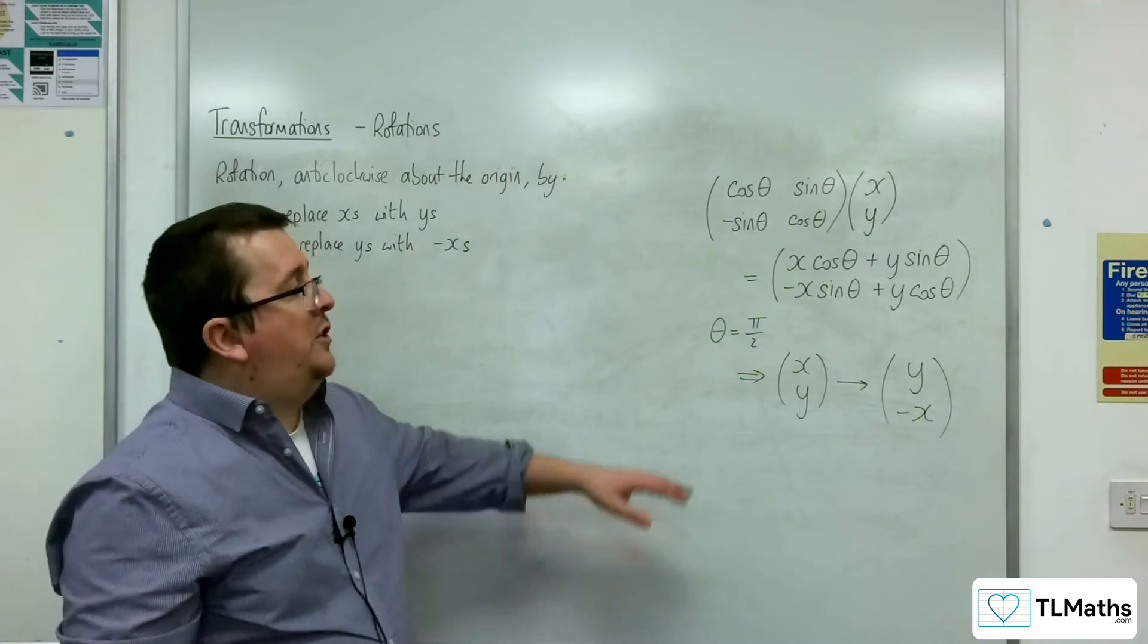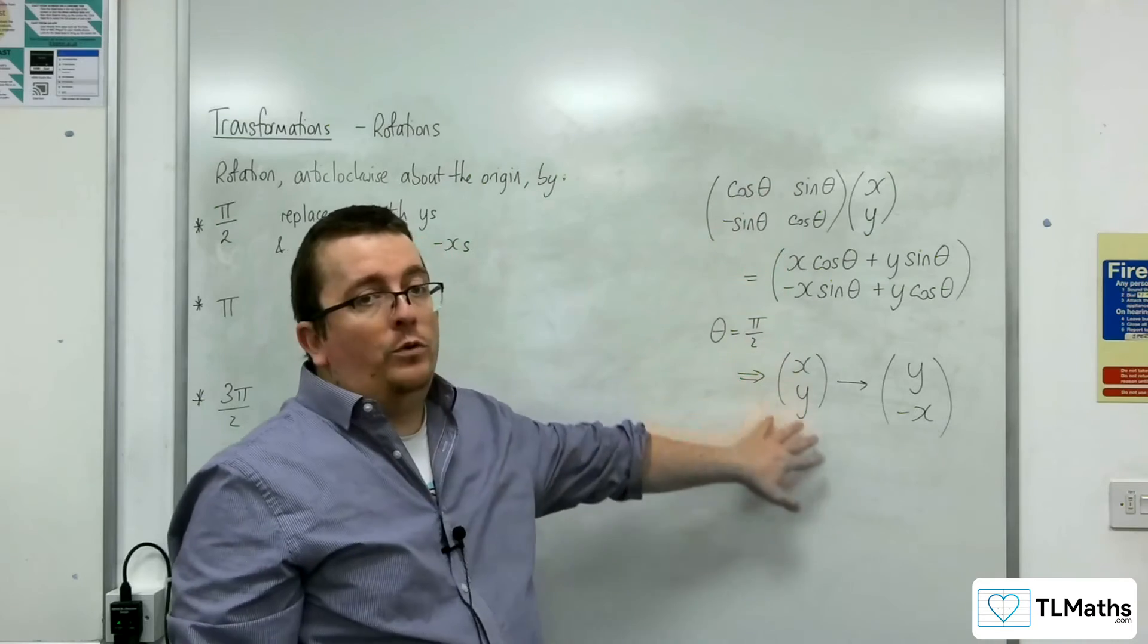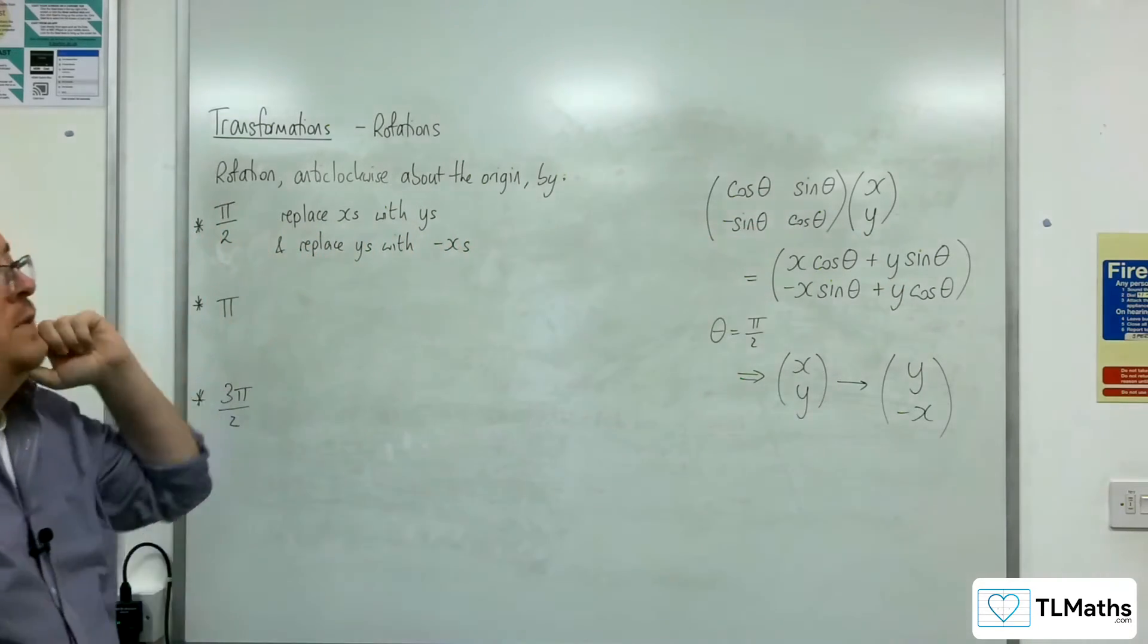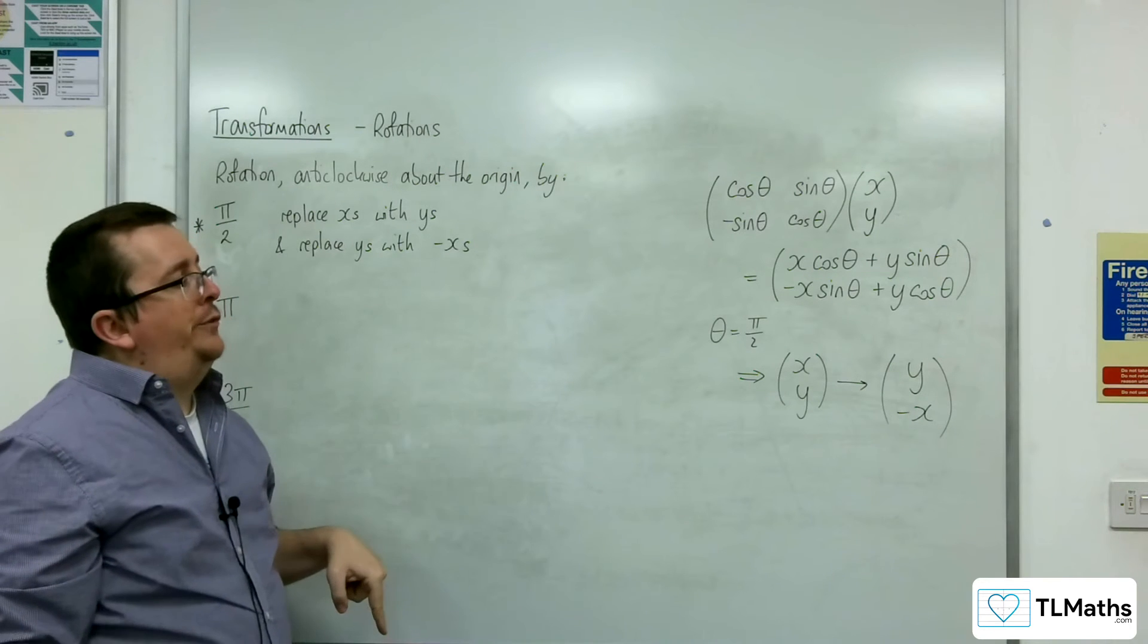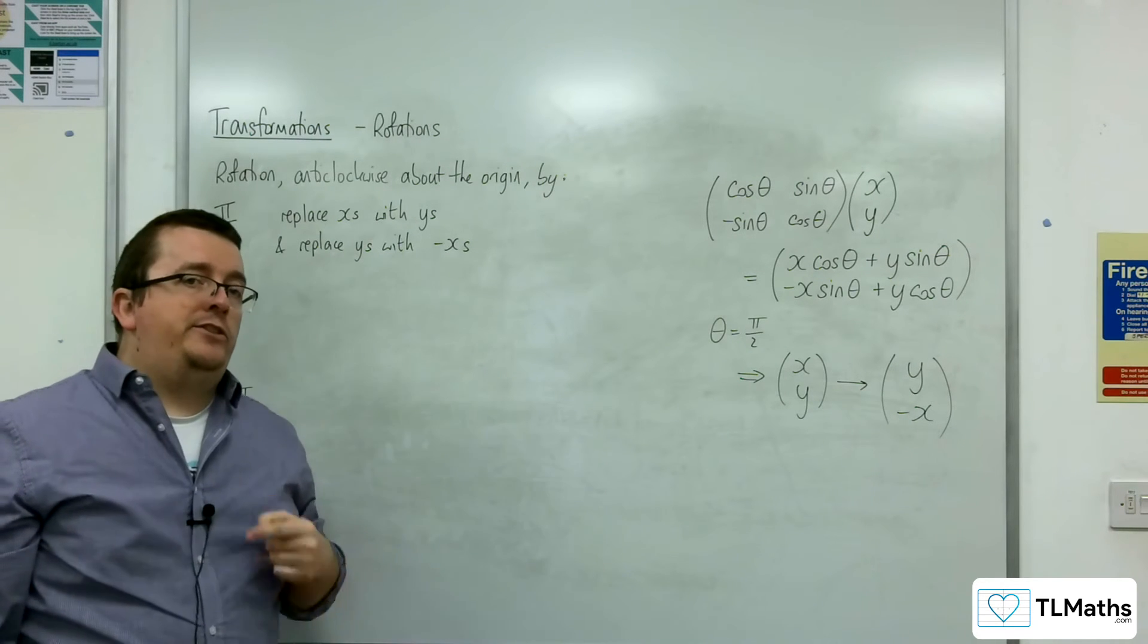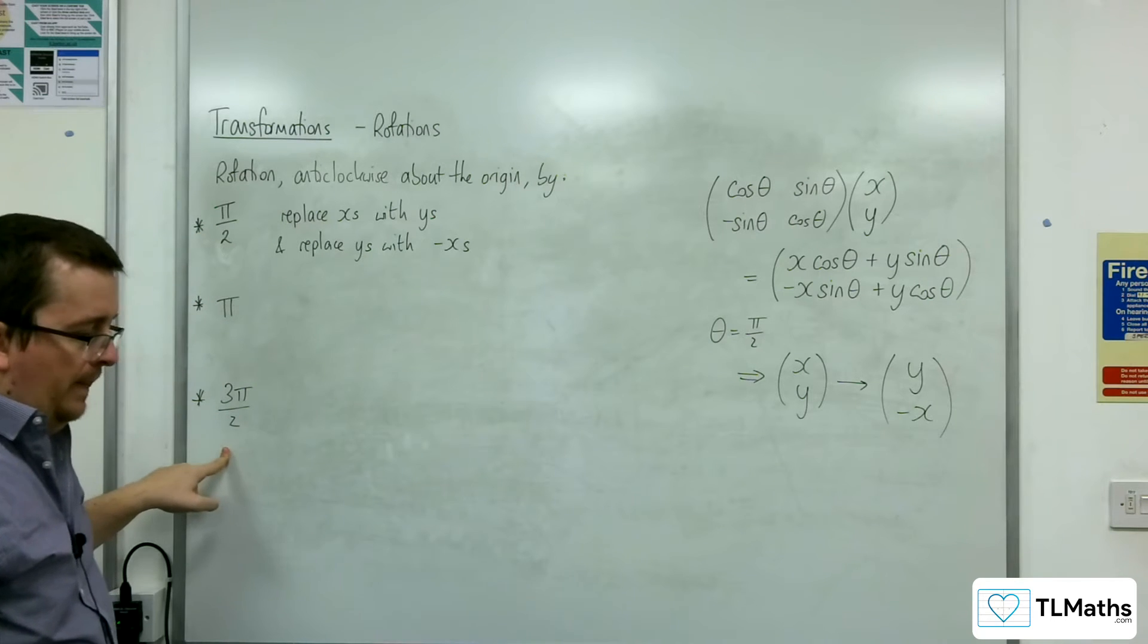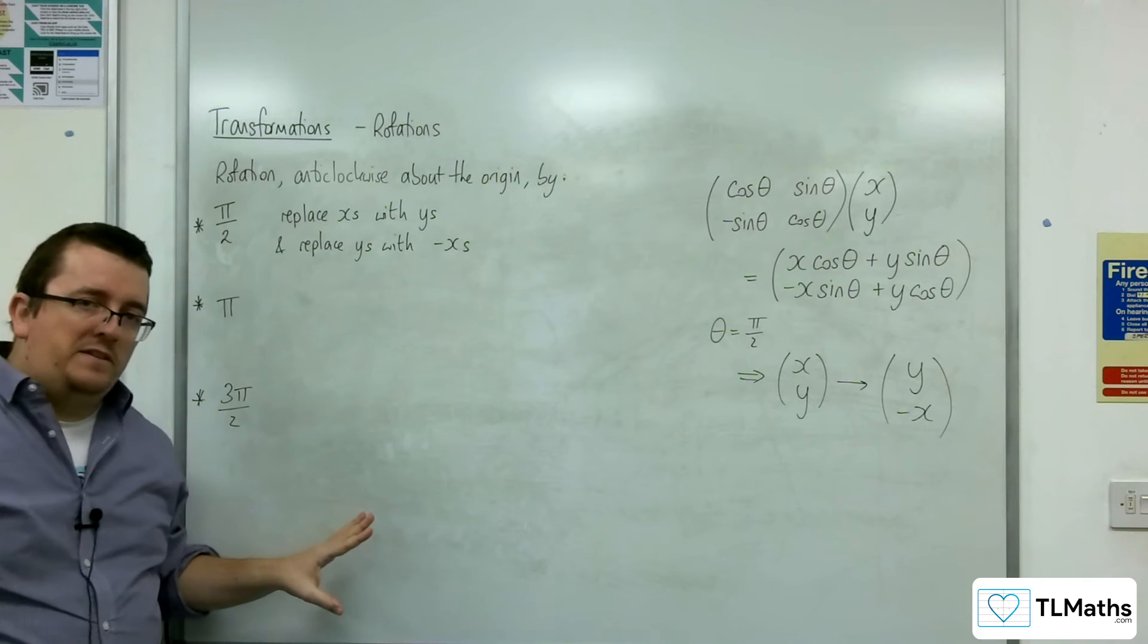Now, this kind of opens up any angle you want. So any angle you want, you could do that. Now, for the AQA Further Maths course, you are limited to just rotations by pi over 2, pi, and 3 pi over 2. So they're the only ones you would need to be able to deal with.